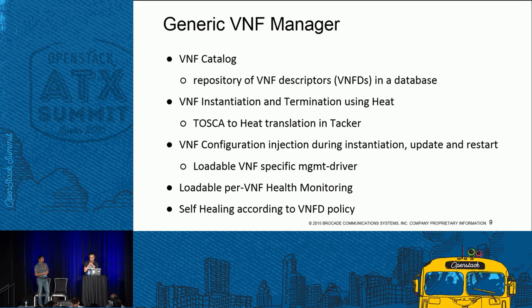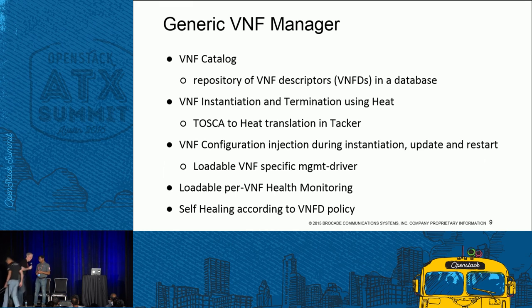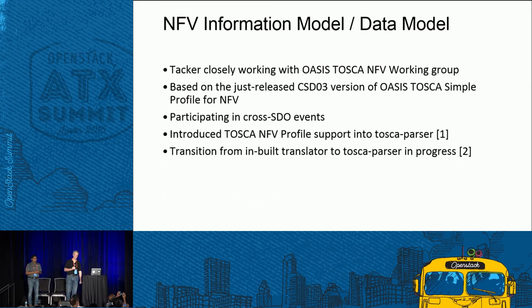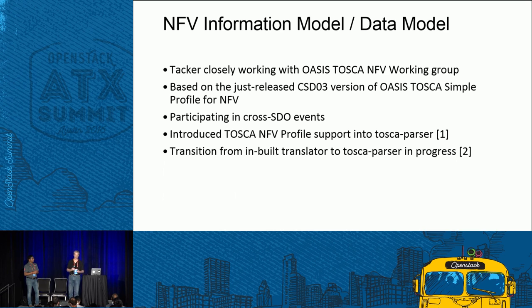Prior to Mitaka, Tacker was using a custom DSL — you could call it TOSCA Lite — but it really didn't have most of the functionality found in full TOSCA. One of the big Mitaka features was integrating the existing TOSCA parser and Heat Translator libraries from the Heat project into Tacker, so we could focus on the important things and get rid of our whole parsing section and the section that generates Heat templates.